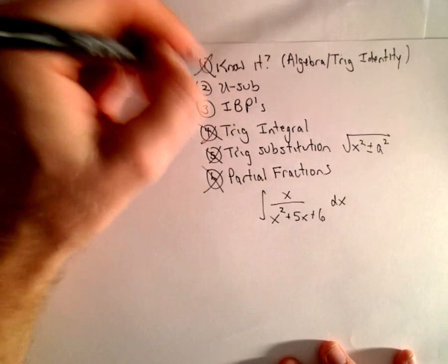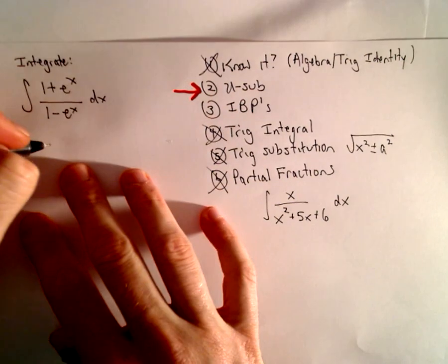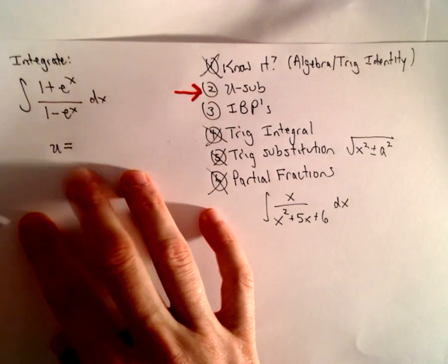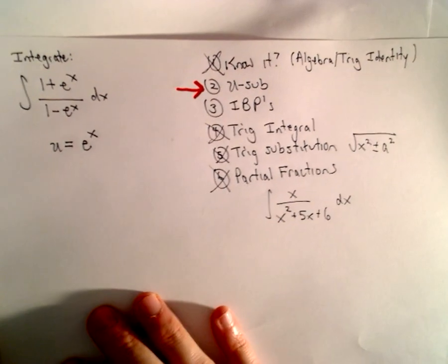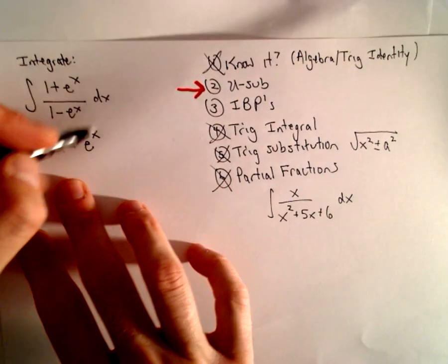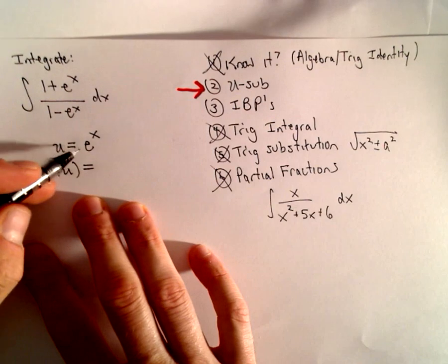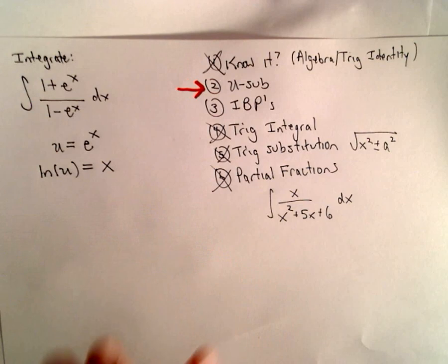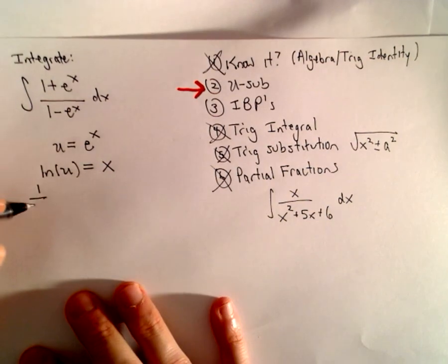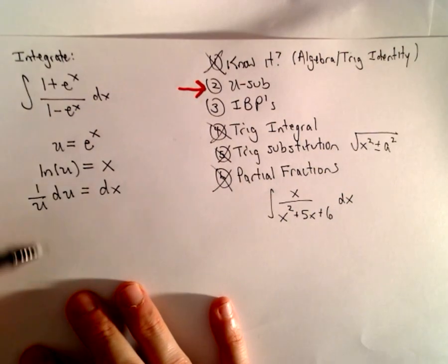So now I've narrowed it down to two things: either a u-sub or integration by parts. I'm going to try a substitution. The thing making me uncomfortable is the e^x, so I'm going to let u = e^x and solve for dx. I'll take the natural logarithm of both sides: ln(u) = ln(e^x) = x. Finding the differential gives us (1/u) du on the left and dx on the right.